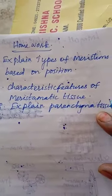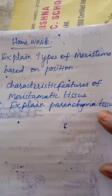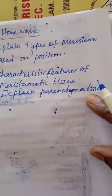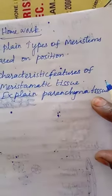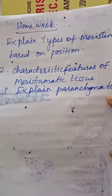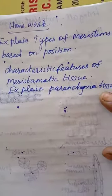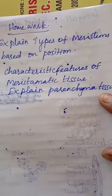Write all this and draw the diagram, and also label the parts. This is the first question answer. Then the second question: characteristic features of meristematic tissue.